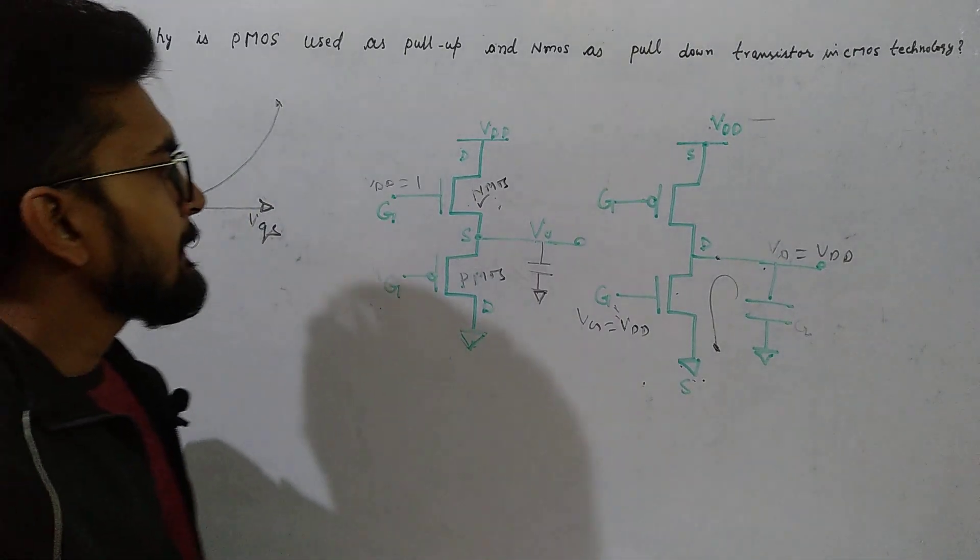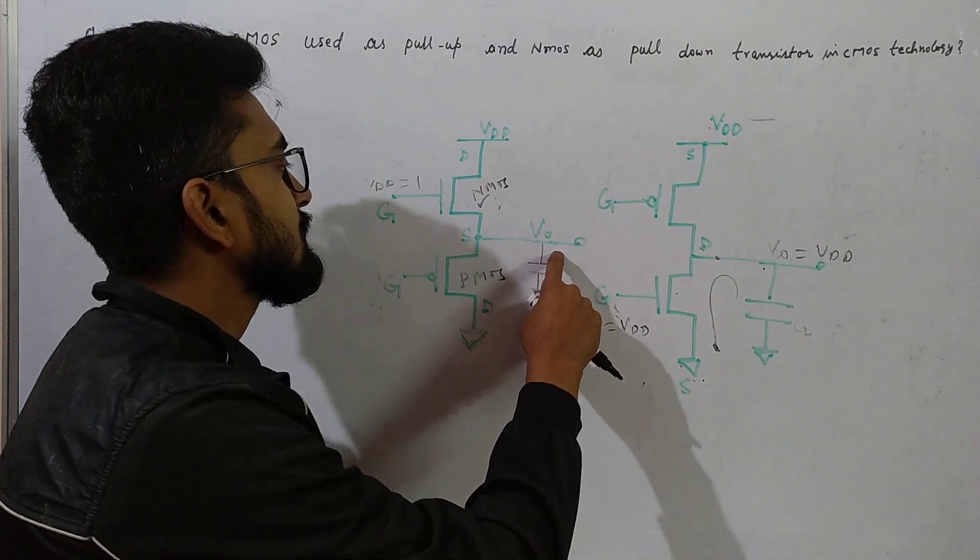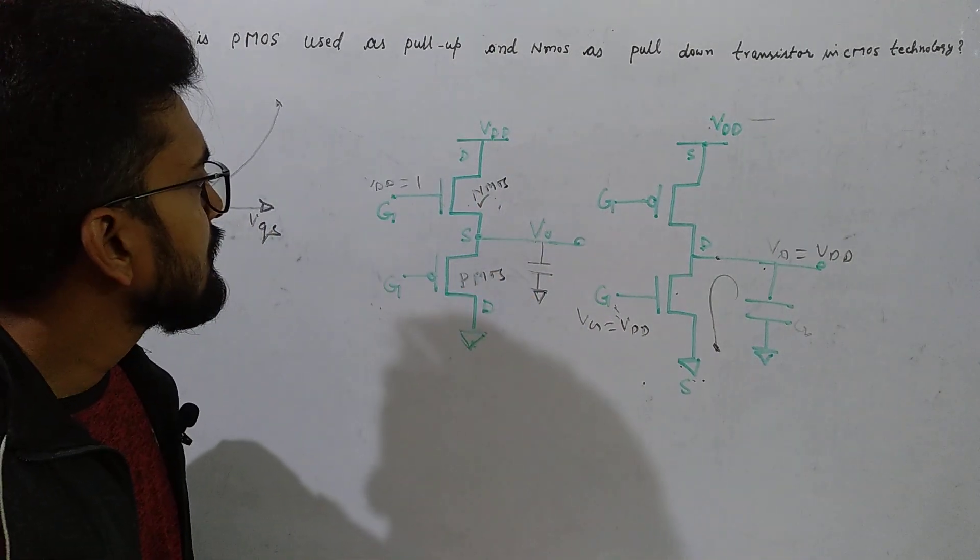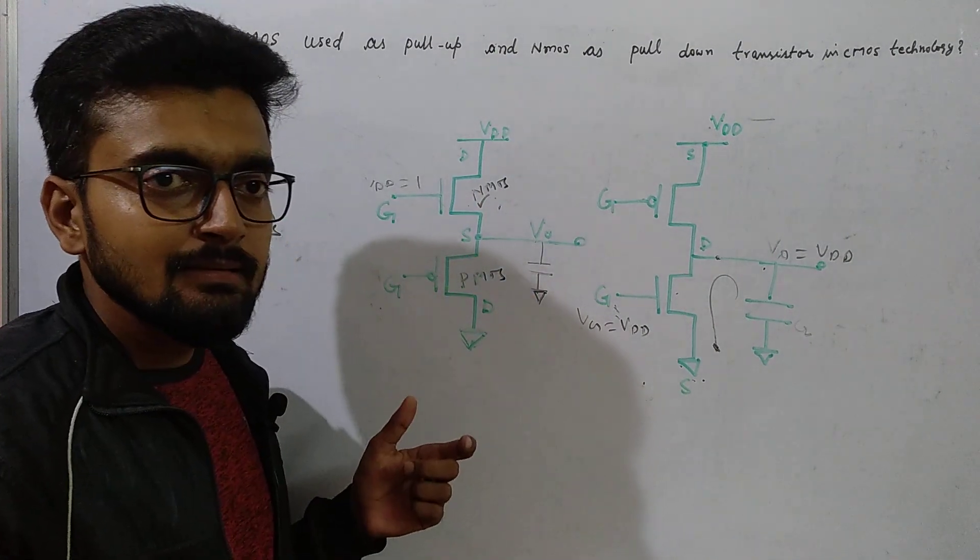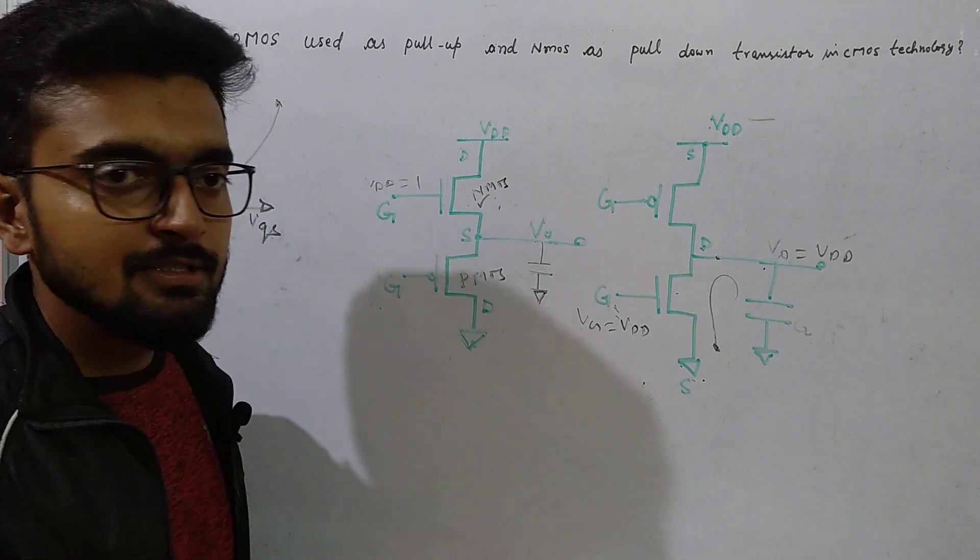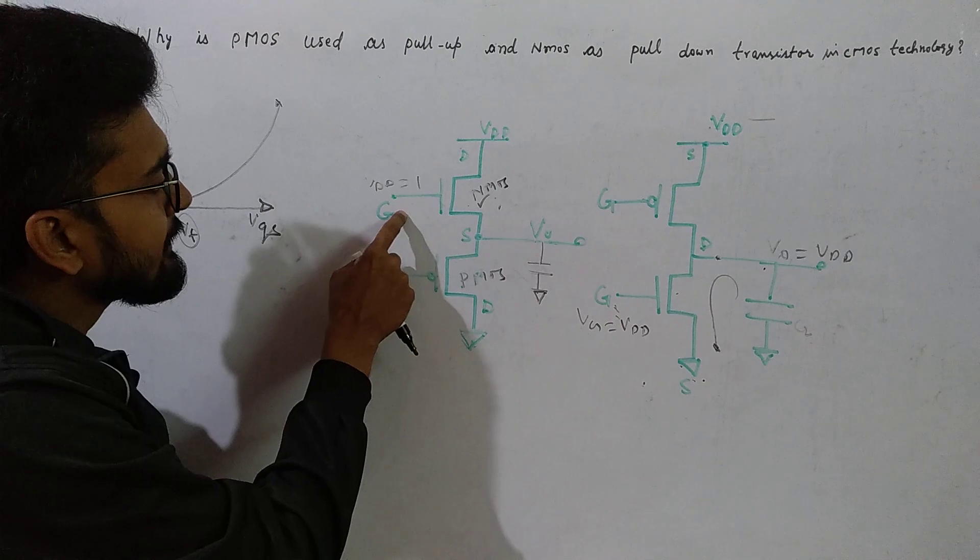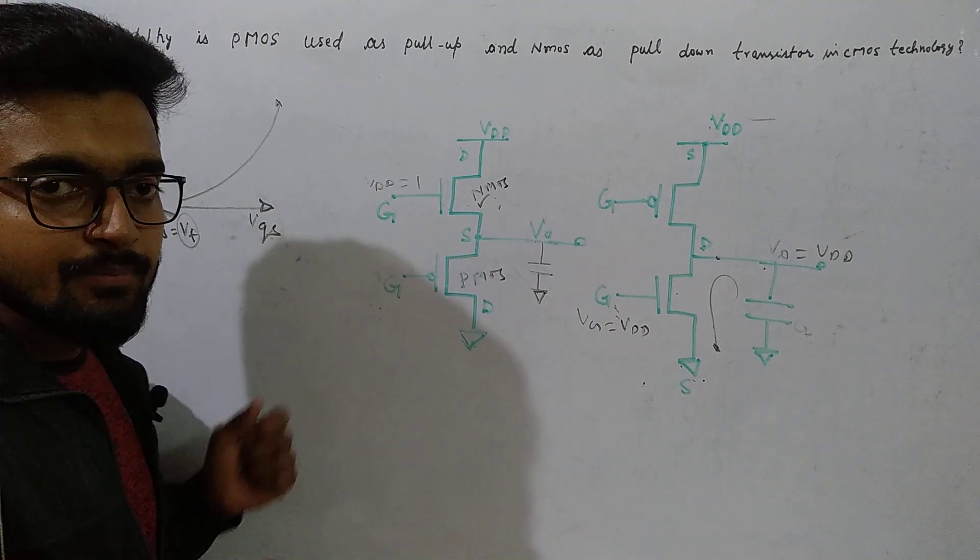To charge this capacitor we have to have this NMOS transistor on. To turn the transistor on, we need to have a certain minimum value across gate to source that will keep this transistor on.